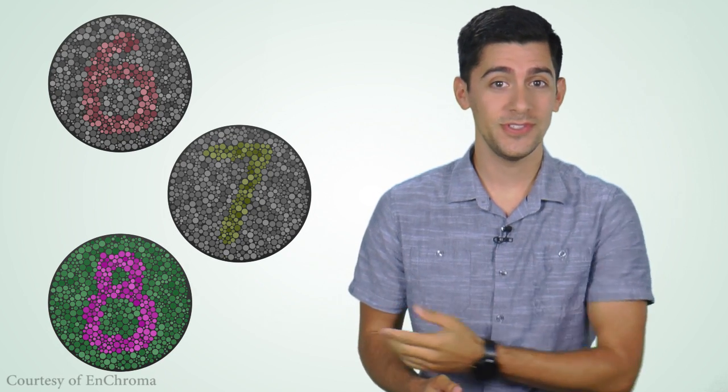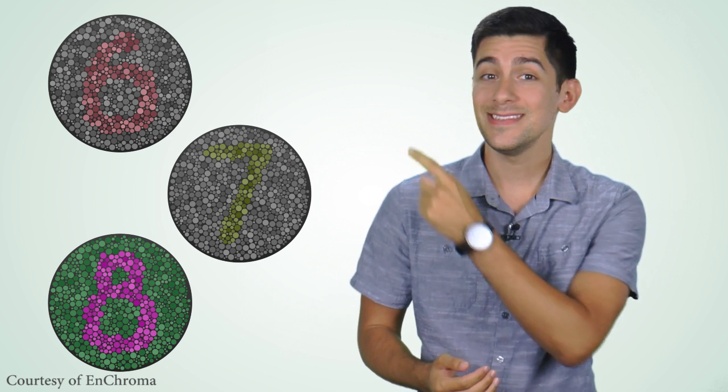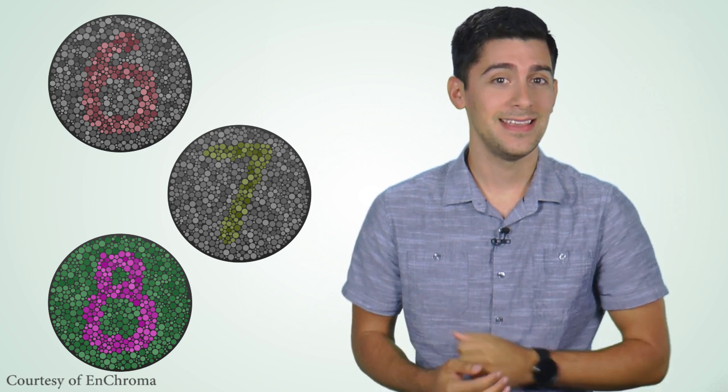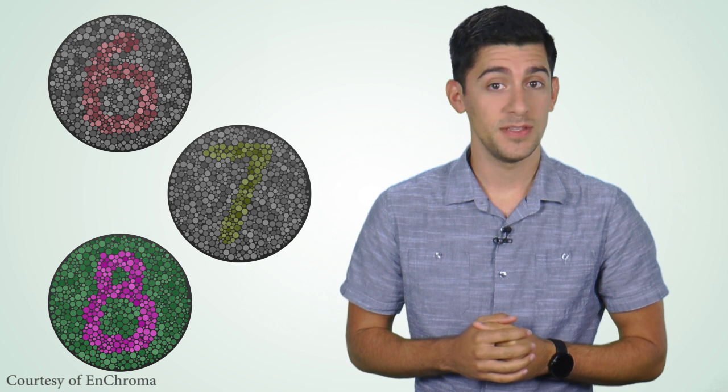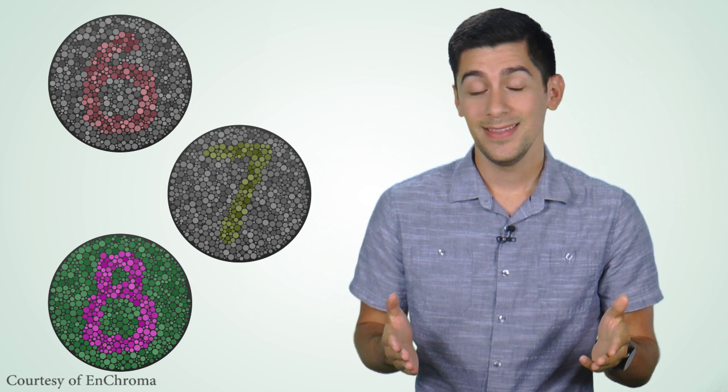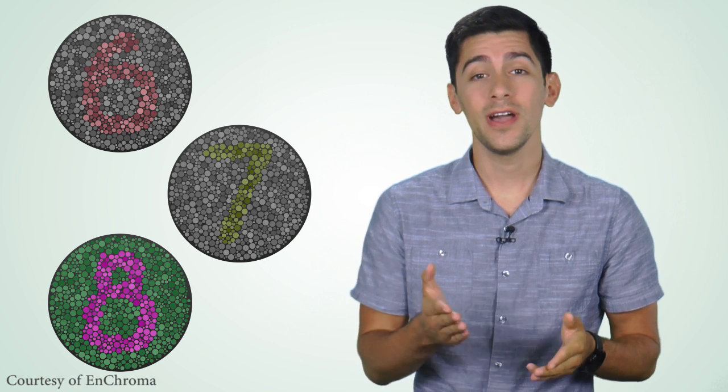Let's test your eyes. Can you see the numbers in these circles? If you see 6, 7, and 8, then you probably don't have color vision issues. If you saw something different, or nothing, then you might have poor color vision or colorblindness.